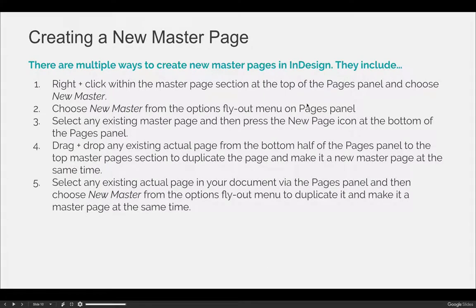To create new master pages, you can right-click anywhere within the master page section at the top of the pages panel and choose to create a new master. You can also hit the options flyout menu in the top right-hand corner of the pages panel and choose New Master. You can also select any existing master page and press the new page icon at the very bottom of your pages panel and it will create a new master page.